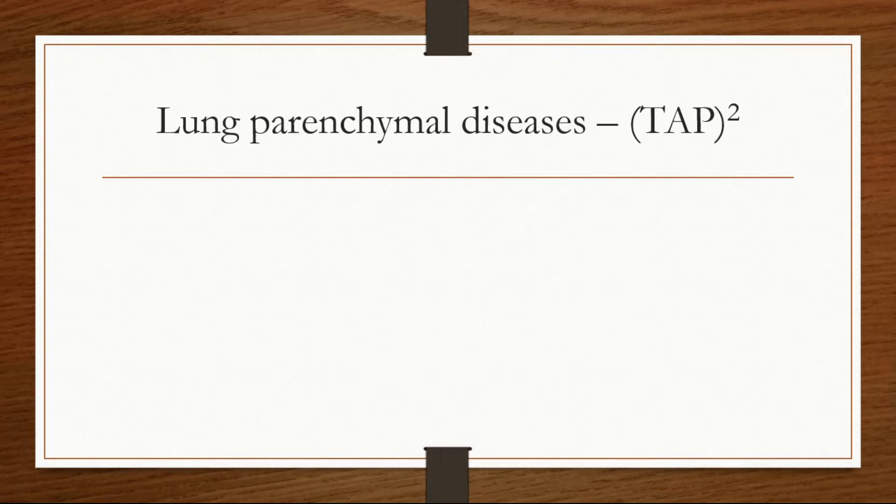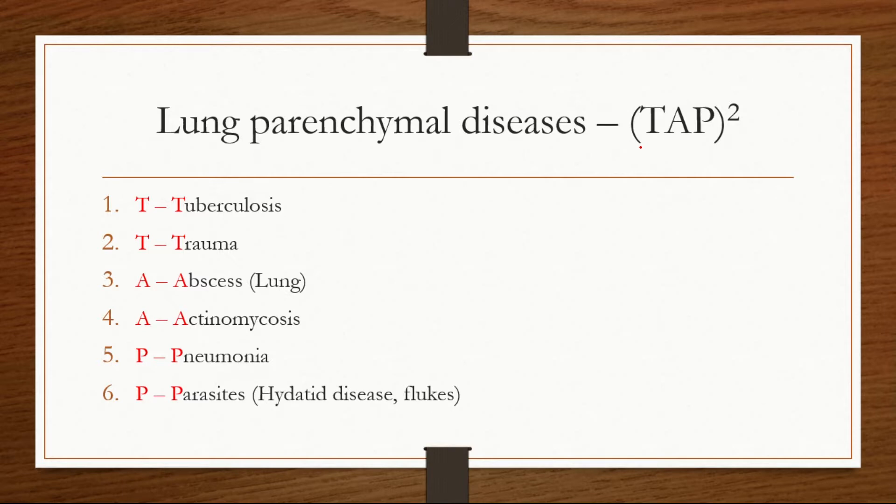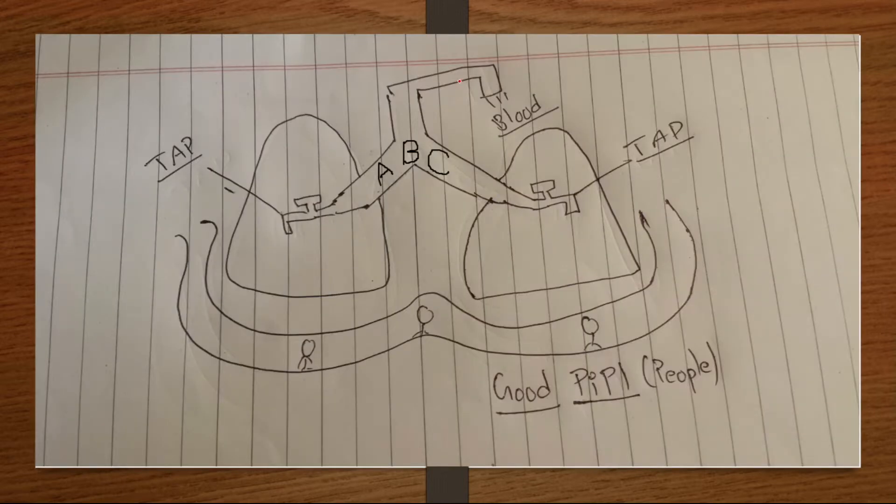From this we can learn the mnemonic about the causes of hemoptysis that are related to the lung parenchyma. So as we have two taps, I've written TAP square. First T for tuberculosis, another T refers to trauma, then A for lung abscess, A for actinomycosis fungal infection, P for pneumonia and P for parasites such as hydatid cysts and flukes.